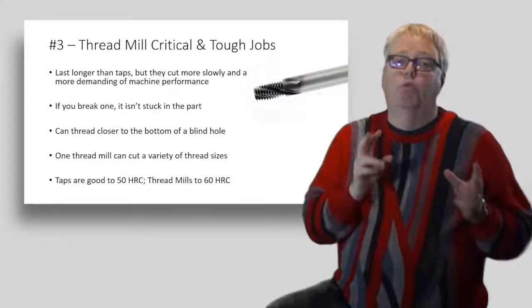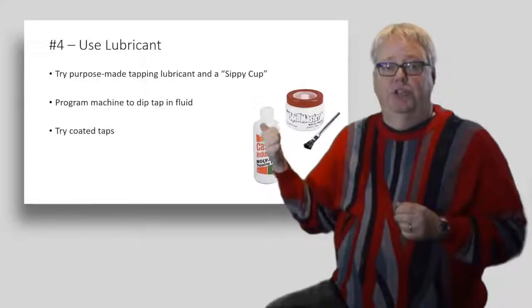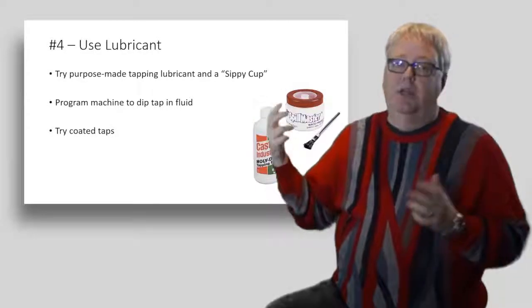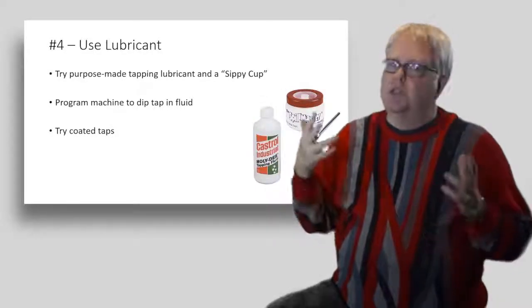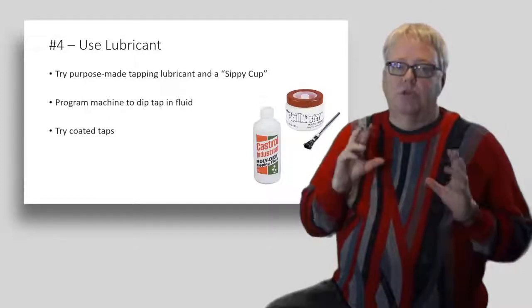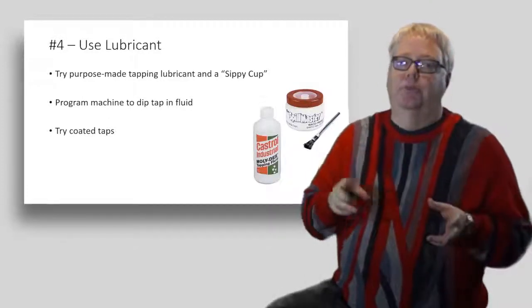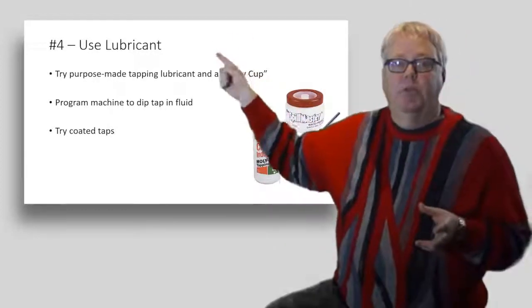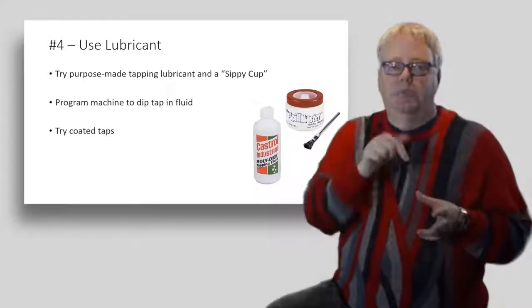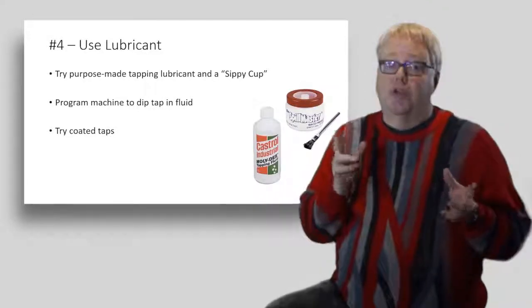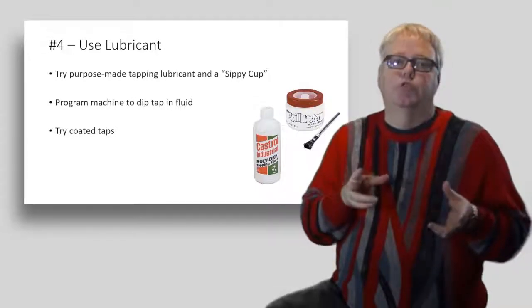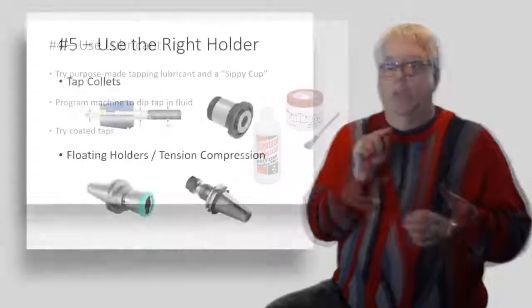My fourth suggestion to minimize tap breakage is to consider a purpose-made tapping lubricant. Most machine coolants, especially the water-soluble ones, are not as good for tapping. If you're having problems, try using some special tapping lubricant. Put it in a spill-proof cup like the one I show here, sit it right on your machine table, and program your G-code to dip the tap automatically in the cup. You also try coated taps because the coating adds lubricity which requires less torque to do the tapping.